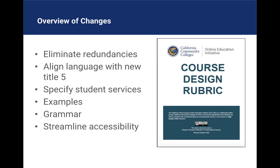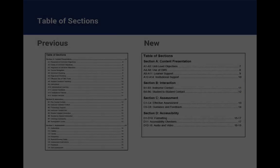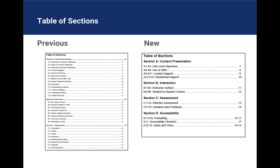Overall, the rubric was changed to eliminate redundancies, align its language with new changes to Title V related to distance education, some student services are specified, examples are provided, and changes were made to grammar as well as streamlining the accessibility section. The table of sections has fewer entries showing how the criteria have been combined.